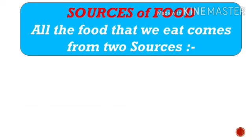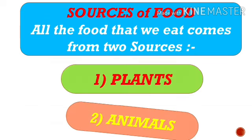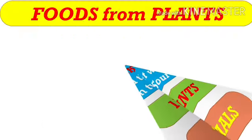Sources of food — it means where do we get food from? All the food that we eat comes from two sources: plants and animals. Let us have a look at sources of food in detail.